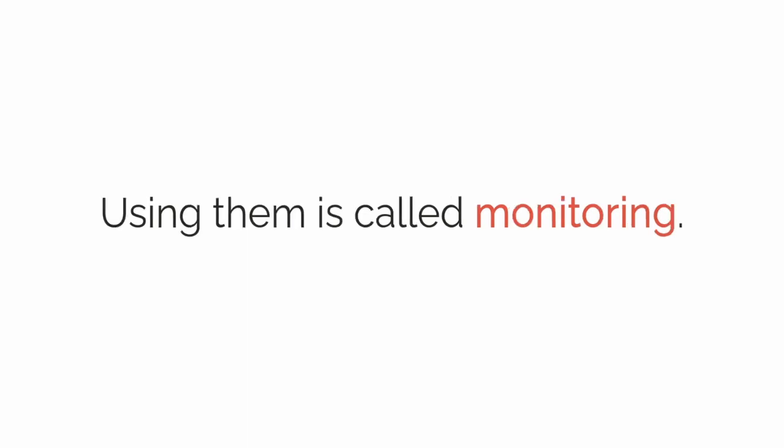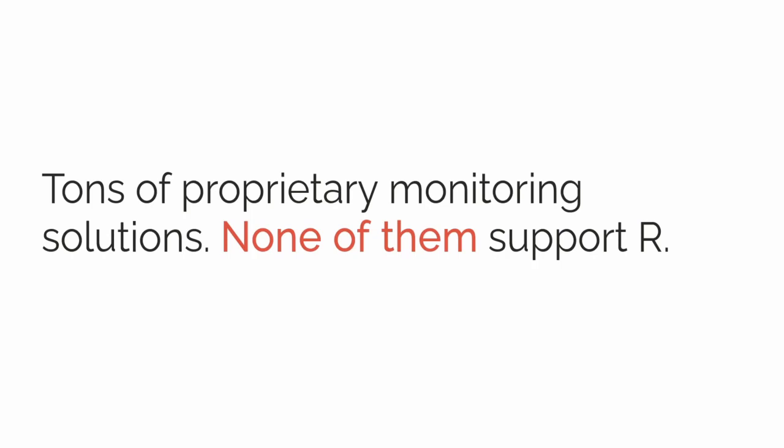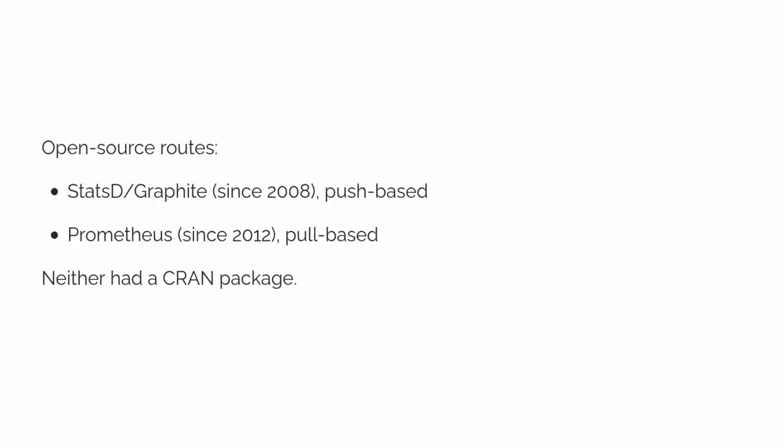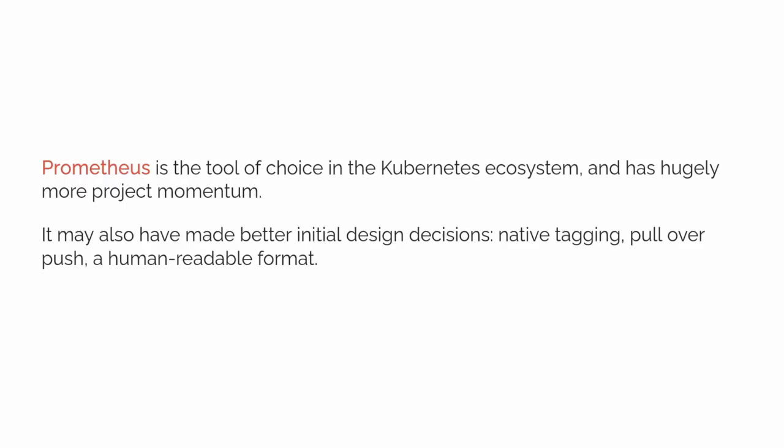These are all old problems and there are tons of proprietary monitoring solutions out there, some of which have been around for decades, but none of them to my knowledge have ever supported R. In the open source ecosystem there are really two big open source monitoring projects: the first is StatsD and Graphite, and the second is Prometheus. Prometheus uses a poll-based model, meaning Prometheus itself is responsible for finding your application and asking it for its metrics. It's currently the tool of choice in the Kubernetes ecosystem and has more project momentum. At Crescendo we were originally targeting Kubernetes, so using Prometheus made a lot of sense.